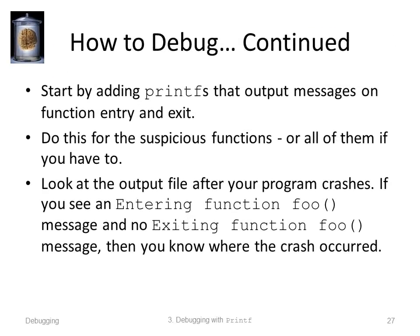Thinking about a program that crashes: start by adding some printfs that output messages on function entry and exit. Do this for the suspicious functions, or all of them if you have to. Look at the output file after your program crashes. If you see an 'entering function foo' message but you don't see an 'exiting function foo', then you know the crash occurred in function foo. And of course this won't be a ten-page function — this will be a short function, because you know to make short functions, right? That gives you a big clue.